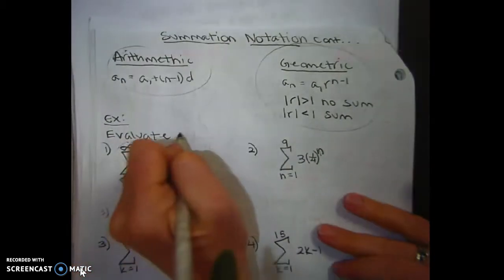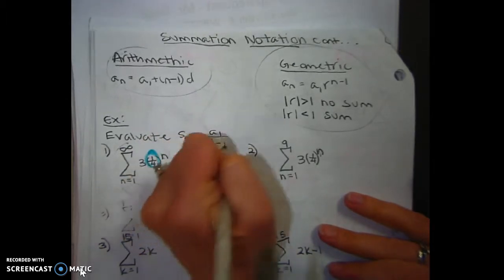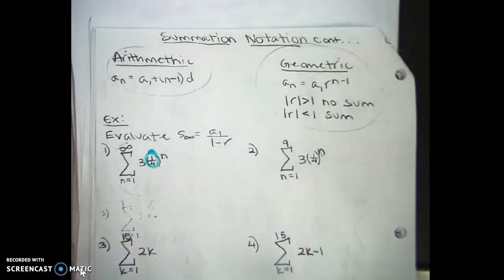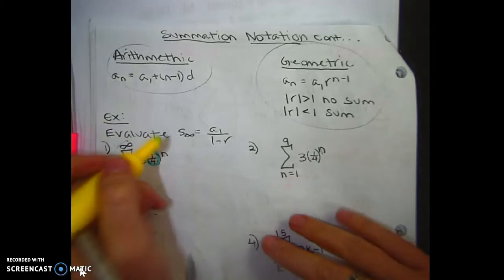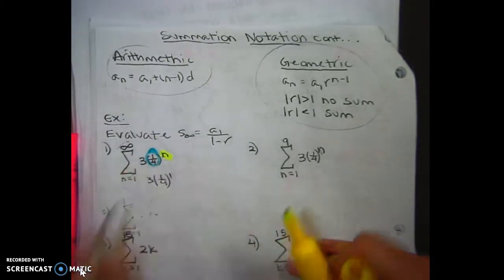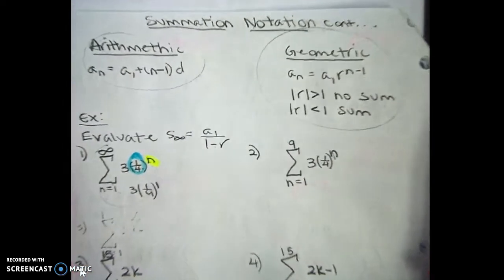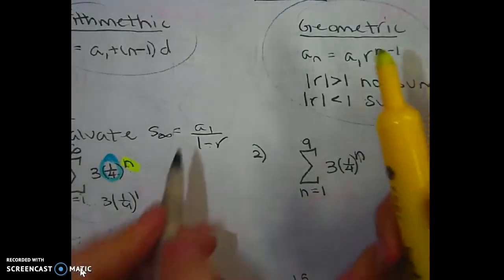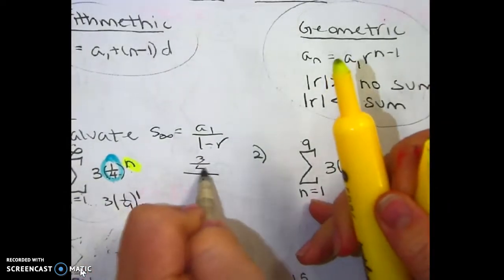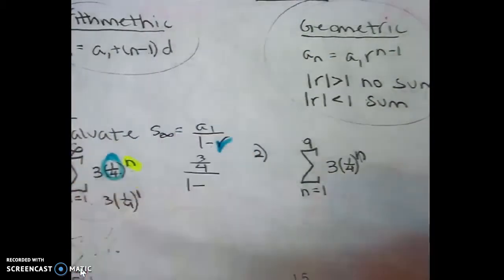I'm going to write down that formula. The sum of the infinite geometric series is a sub 1 over 1 minus r. Now, to get the first term, you have to plug 1 in for n. So I go 3 times (1/4) to the 1st power. One-fourth to the first power is 1/4. Times 3 is 3/4. So my first term is 3/4, over 1 minus my ratio, which is 1/4.